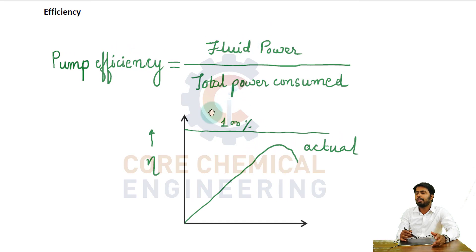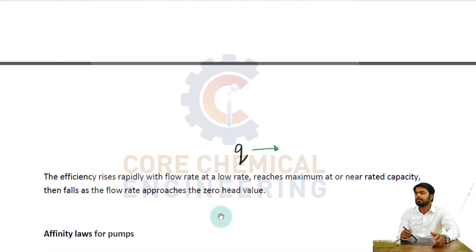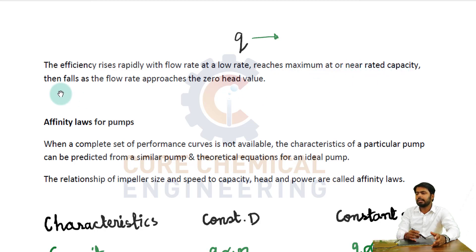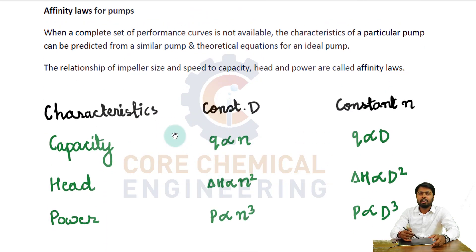Power efficiency is fluid power divided by total power consumed. The efficiency versus flow rate curve shows that efficiency rises rapidly with flow rate at low flow rates, reaches a maximum at or near rated capacity, then falls as the flow rate approaches the zero-head value.